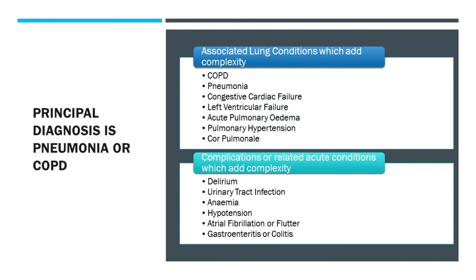If you have a principal diagnosis of pneumonia or COPD exacerbation, you can add different lung conditions. Each of the conditions listed will add a point to complexity. Within pneumonia there are really two complexity levels — minor and major — and adding only one of these will easily move the category from minor to major, which usually doubles the funding. Realistically, most of our pneumonia and COPD exacerbation presentations are actually major in complexity, but we're missing out because of limitations in documentation.